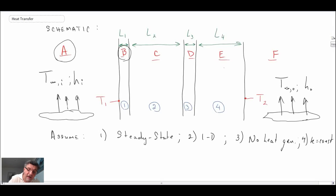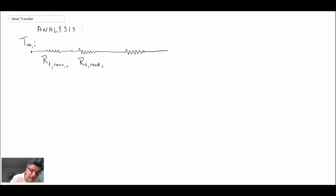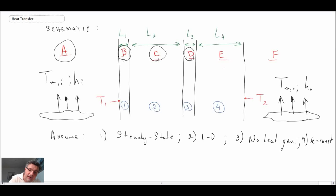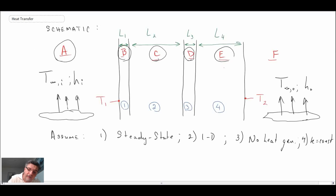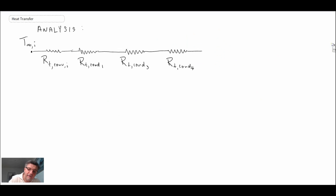We then move into the fiberglass pink insulation with length scale 2, giving R_t,conduction,2. After that, we pass through another wall board layer with length L3, giving R_t,conduction,3. Next is the brick on the outside of the wall, adding R_t,conduction,4.